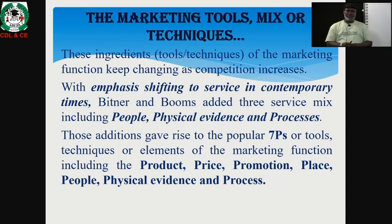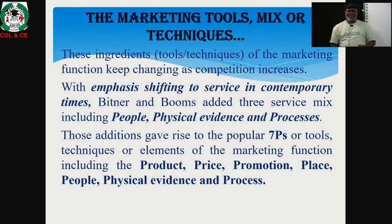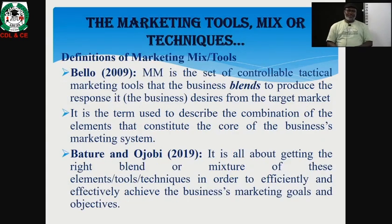Thus, three additional P's were added. What are these three additional P's added to product, price, promotion and place? They include people, physical evidence and process. Overall, in contemporary times, the major tools used for the marketing function are seven, and these include product, price, promotion, place, people, physical evidence and process.